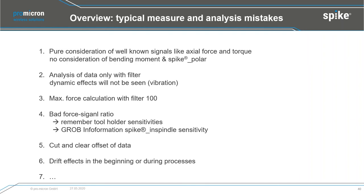Third: maximum force calculation should always be done with filter 1, not filter 100, because using a moving average filter reduces the slope of the data and underestimates peak values. Fourth: a bad signal-to-noise ratio — remember the tool holder sensitivities. By looking at filter 1 in your test files, you can check whether the tool holder is sensitive enough for the forces in your operation. The noise-to-force ratio needs to be large enough: 1:1 is undetectable, 1:2 is difficult, 1:3 should be clearly visible.